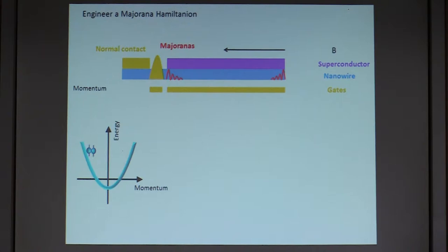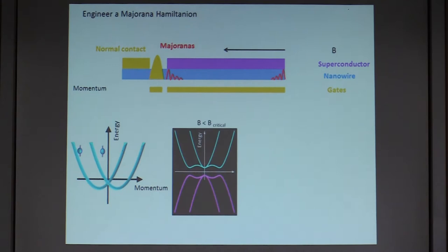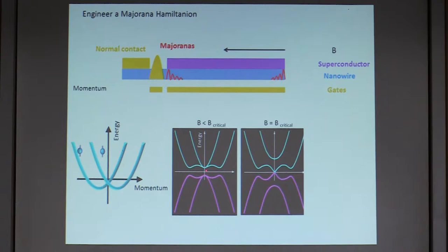If you look at the energy spectrum, starting with a one-dimensional nanowire, you get a parabola of energy versus momentum with spin degeneracy. Adding a small Rashba spin-orbit coupling splits the spin-degenerate subbands to left and right; this splitting is proportional to the strength of the spin-orbit coupling. Adding a superconductor creates particle-hole symmetry — all the bands are mirrored around zero energy — and opens a gap at the Fermi energy. Then applying a magnetic field destroys this degeneracy point.